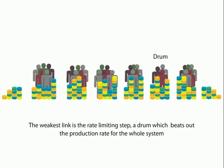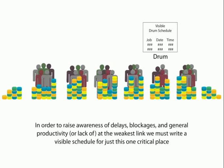So the weakest link is the rate-limiting step — a drum which beats out the production rate for the whole system. In other words, it is a proxy at which the whole system is going to work. The rate, speed, and rhythm of the production system is decided by the weakest link. The whole system will then have to synchronize itself with the rate at which this drum beats. In order to raise awareness of delays, blockages, and general productivity at the weakest link, we must write a visible schedule for just this one critical place.